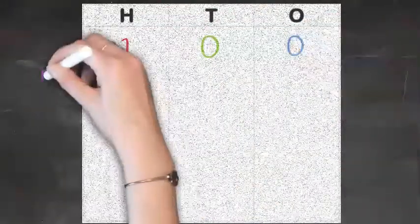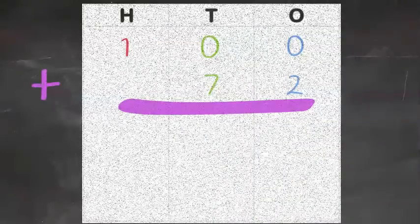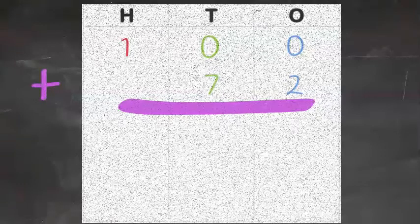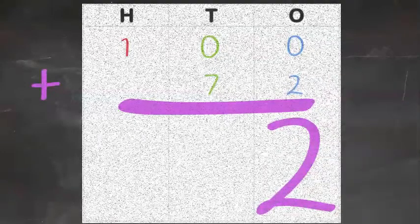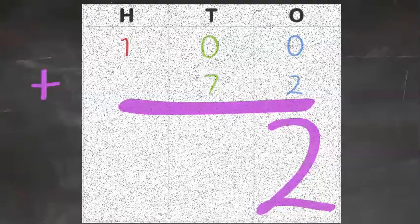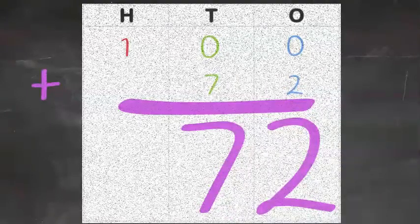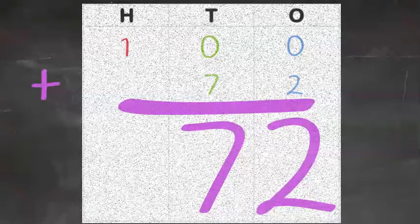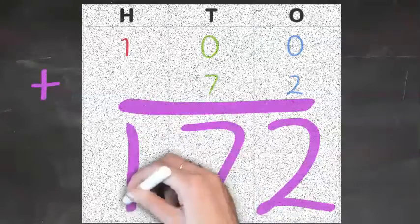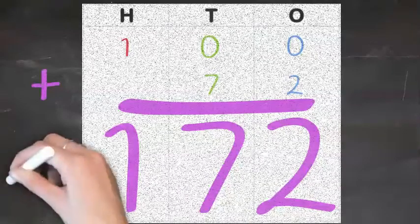And for the next question, we had 100 plus 72. Now, take note, in the number 72, we have two ones and we have seven tens or 70, which we are adding to the number 100. So, in the ones column, you know it will end with a 2. We have seven tens in the tens column and we are left with the 100. So, 100 plus 72 equals 172.